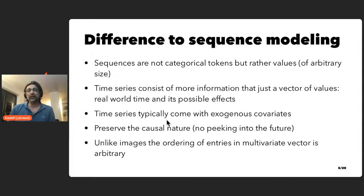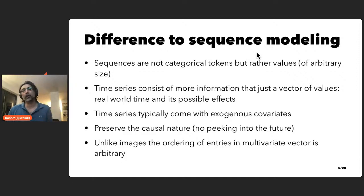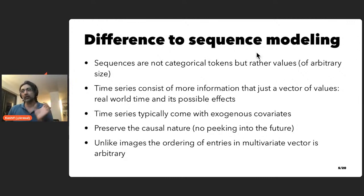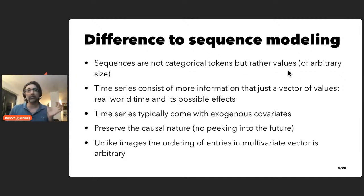It's quite natural to ask what the difference is between neural forecasting versus sequential modeling. Neural forecasting takes a lot of inspiration from sequence modeling, for example from NLP techniques. However, there are key differences. The biggest difference is the fact that sequences in time series data are not tokens but rather numerical values, and these numerical values can have arbitrary numerical size.